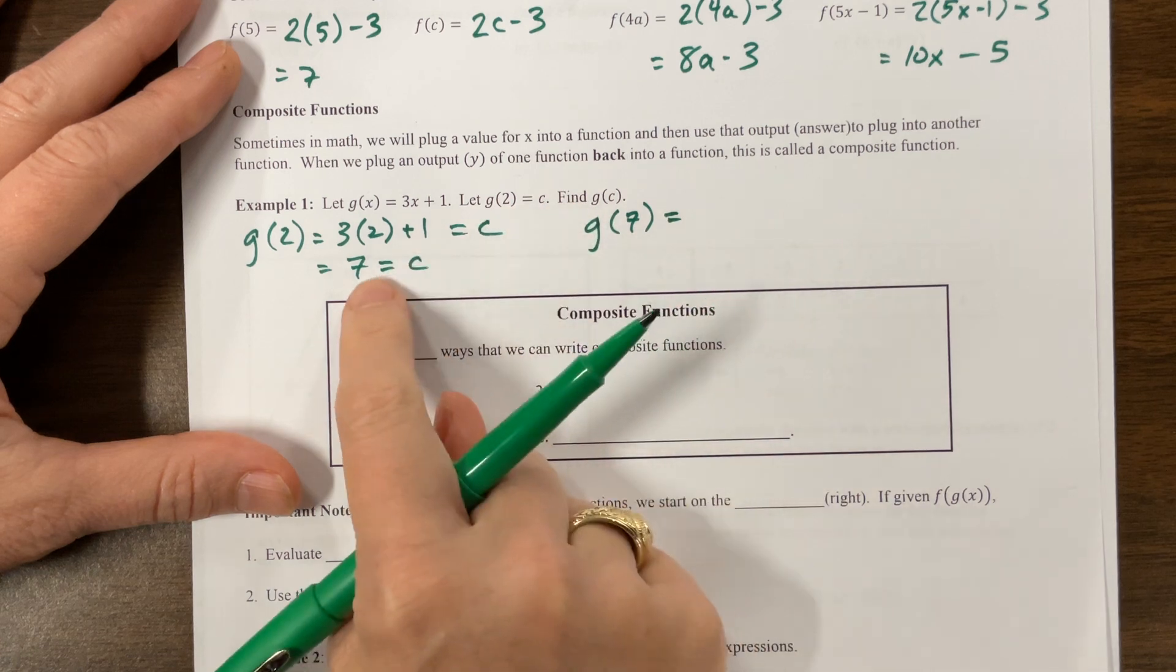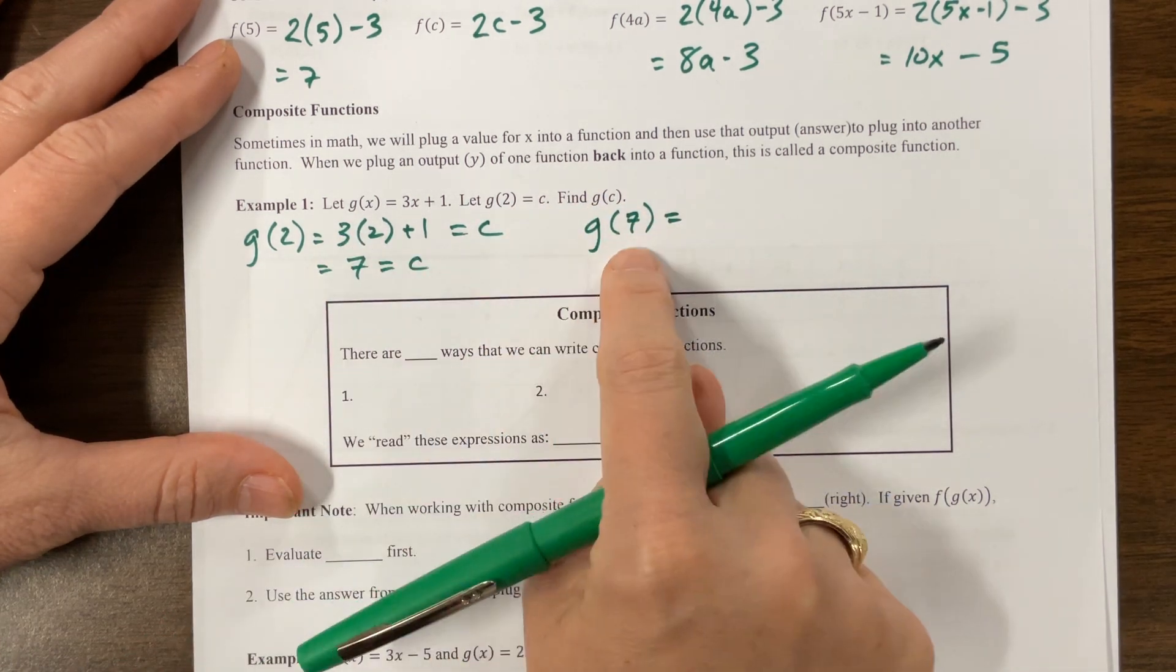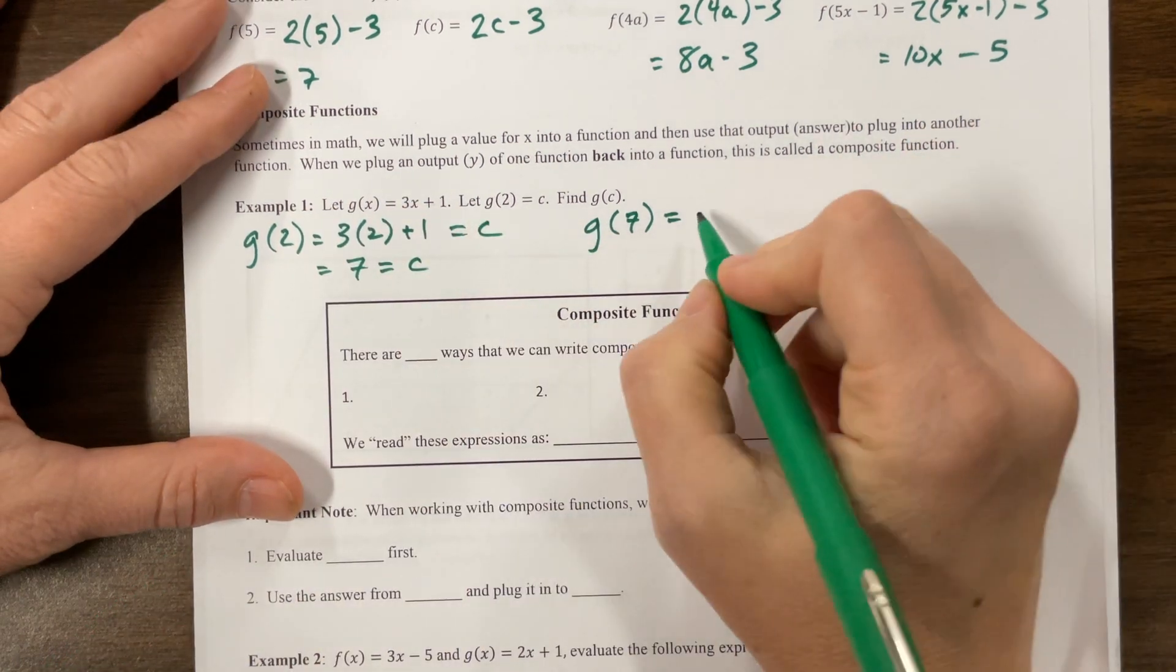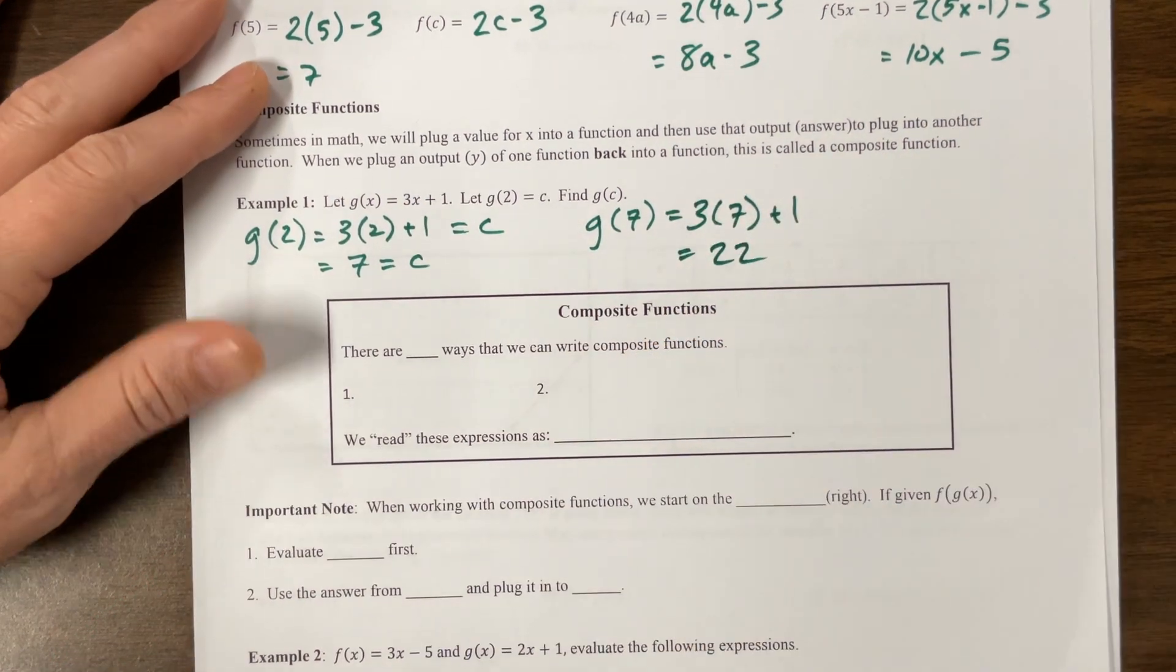So anyway, now once we found c, then we can do g of 7, g of c, and plug that back in. So we have 3 times 7 plus 1, and this is equal to 22.